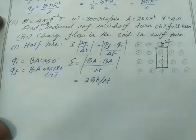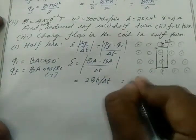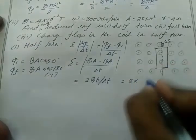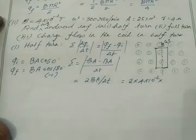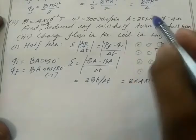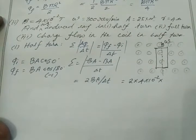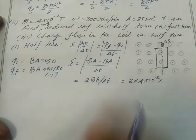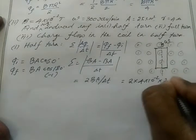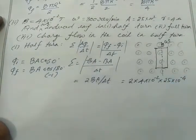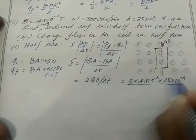Substituting all values: EMF = 2 × (4×10⁻² ) × (25×10⁻⁴) / (1/10). This gives EMF = 2B·A / delta_t with delta_t = 1/10 second for the half turn. The EMF value is in volts — calculate the numerical answer yourself.